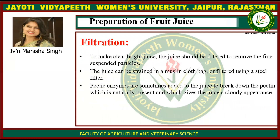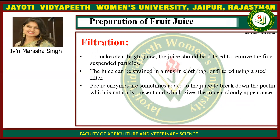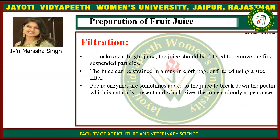Filtration: to make clear bright juice, the fruit juice should be filtered to remove fine suspended particles. The juice can be strained through a muslin cloth bag or filtered using a steel filter. Pectic enzymes are sometimes added to the juice to break down the pectin which is naturally present and which gives the juice a cloudy appearance.